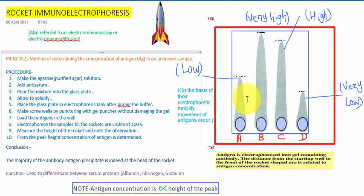After some time, measure the height of the rocket and note the observation. From the peak height, concentration of antigen can be determined. In this area, you will find the precipitate from interaction of antigen and antibody. The antigens move according to electrophoretic mobility. The antigen concentration is directly proportional to the height of the peak. You can see in this picture, antigen B has the highest mobility, so the peak is very high.